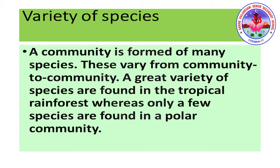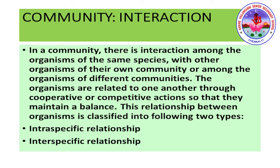Regarding variety of species: a community is formed of many species, and these vary from community to community. A great variety of species are found in tropical rainforests, whereas only a few species are found in polar communities. Community interaction: in a community there is interaction among organisms of the same species, with organisms of other communities, or among organisms of different communities. Organisms are related to one another through cooperative or competitive actions, maintaining a balance.